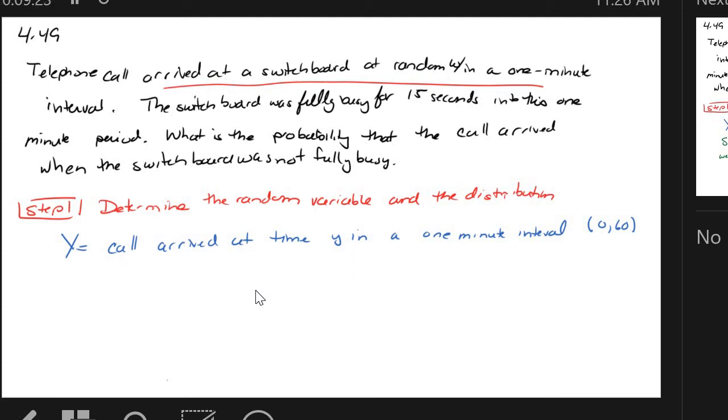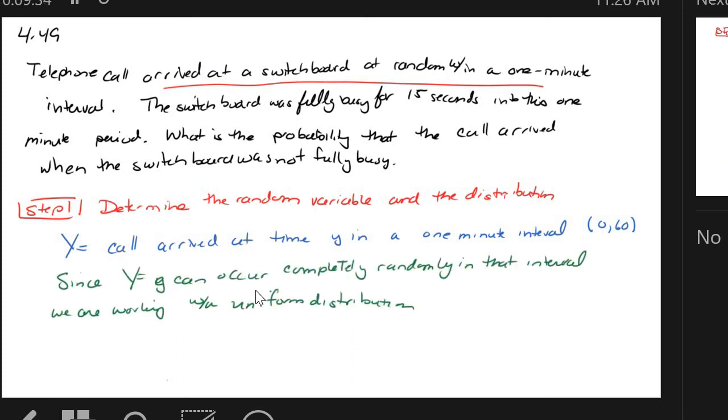So Y, I thought of it as the call coming at a particular time in the one minute interval. I'm already thinking Y equals little y, so I shouldn't actually write it in there like that. But since Y equals little y is random in that interval, it's a uniform distribution. It can uniformly happen at any time in the interval. That's what uniform distribution means.